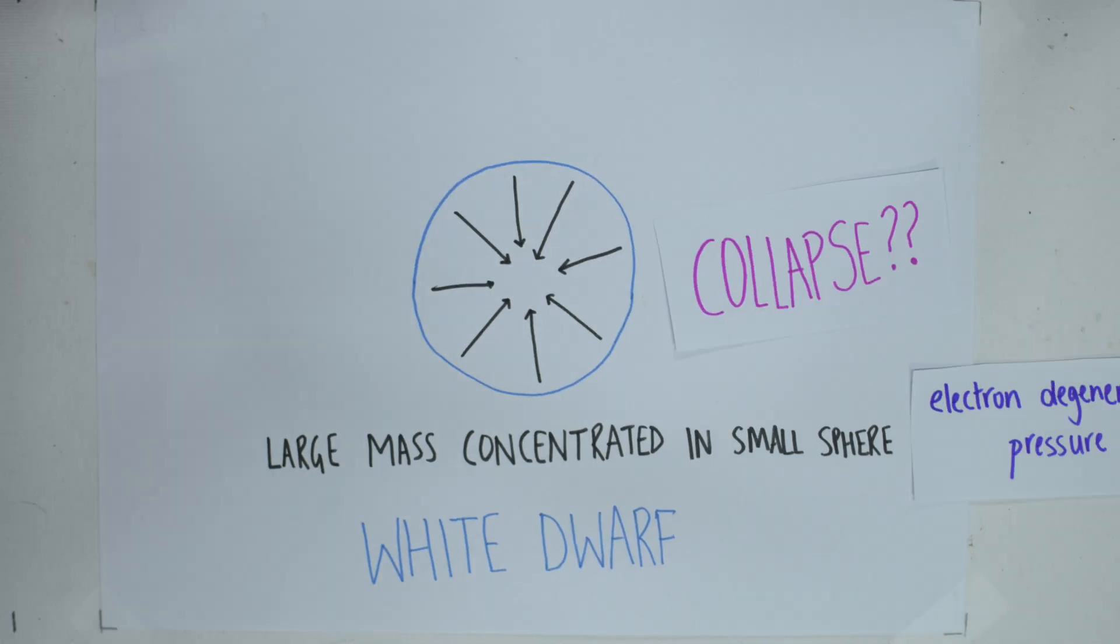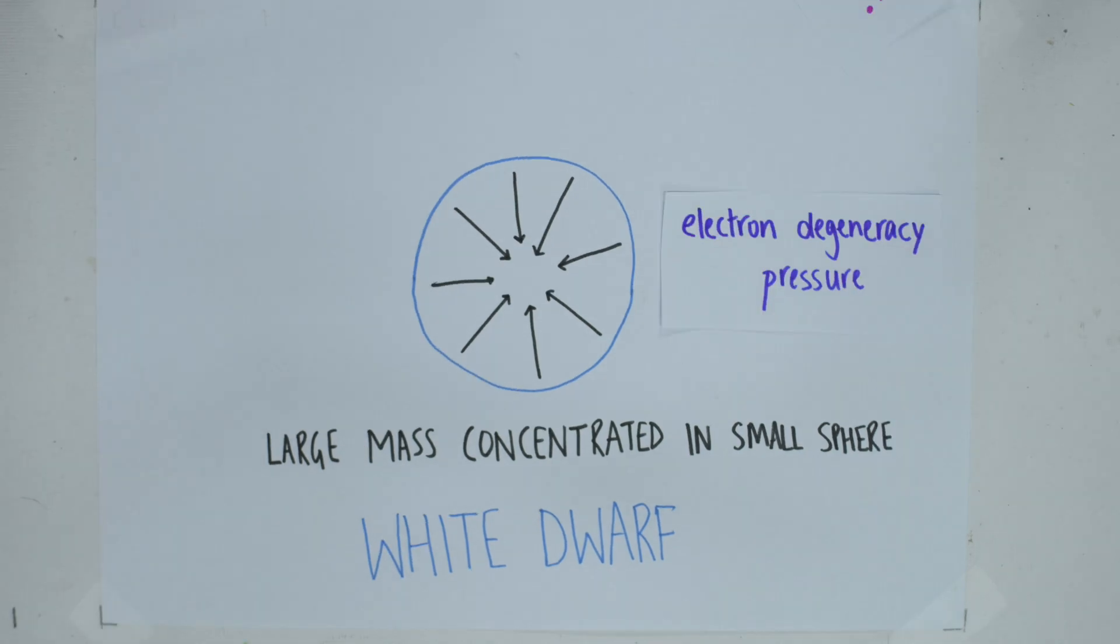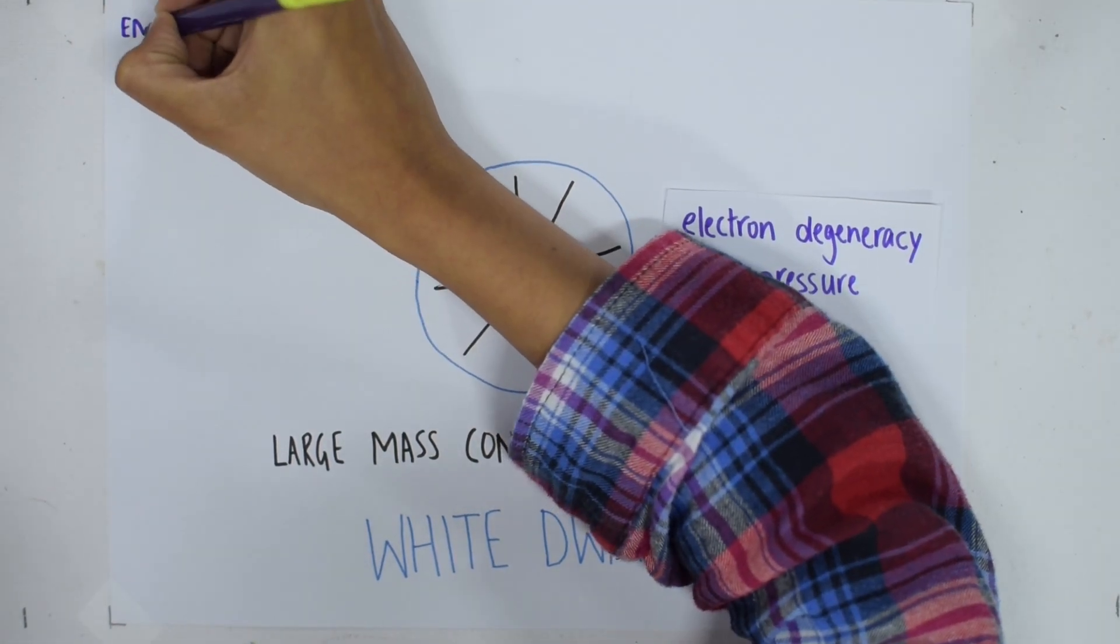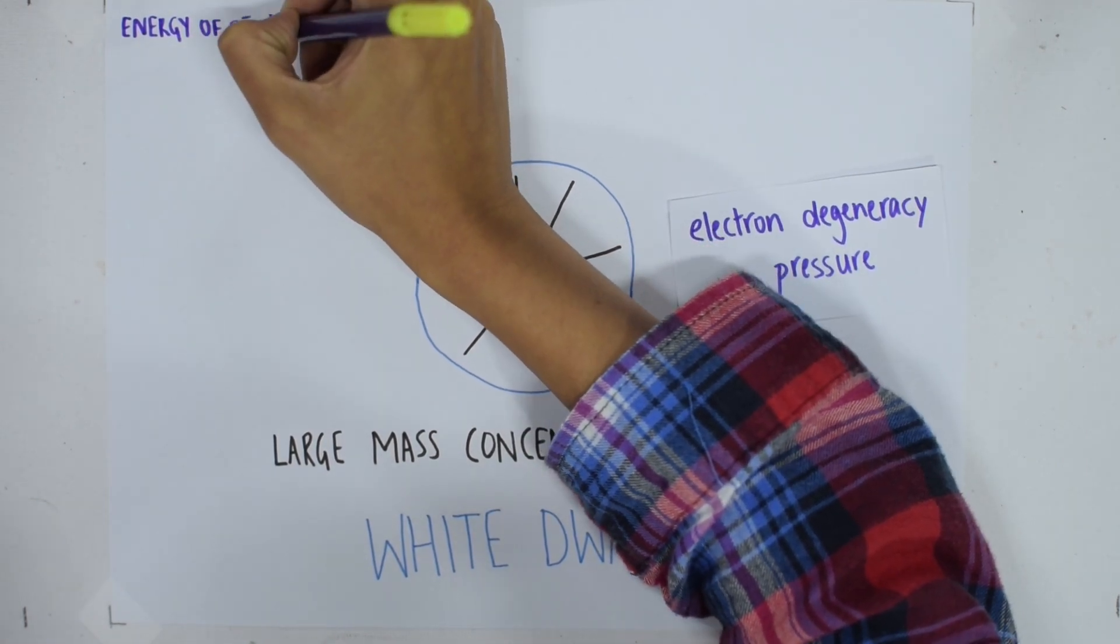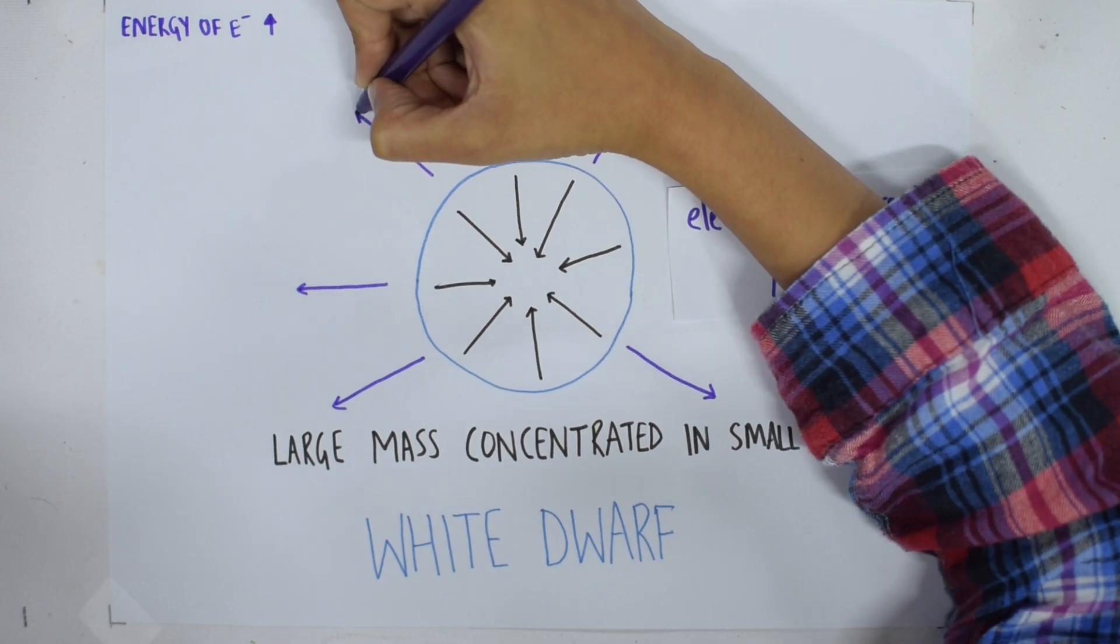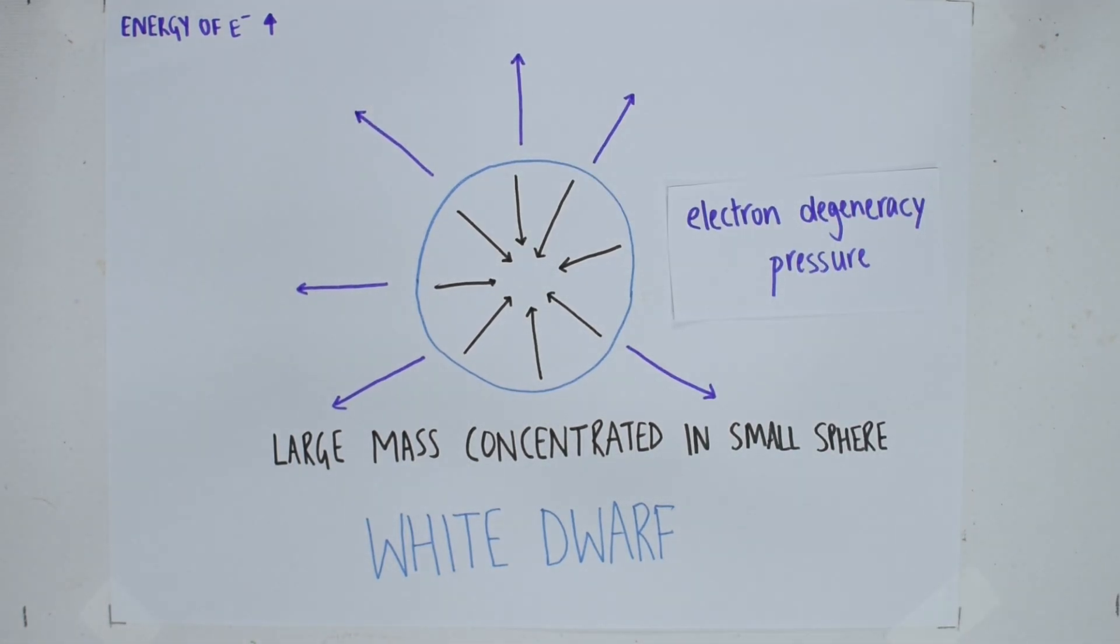This miracle is explained with quantum mechanics and something called electron degeneracy pressure. At the subatomic level, no two electrons can exist at the same energy level. When the atoms are squeezed together by gravity, their electron orbits overlap. So electrons are forced to occupy higher and higher energy levels, creating a pressure against the gravitational force and preventing the star from collapsing.